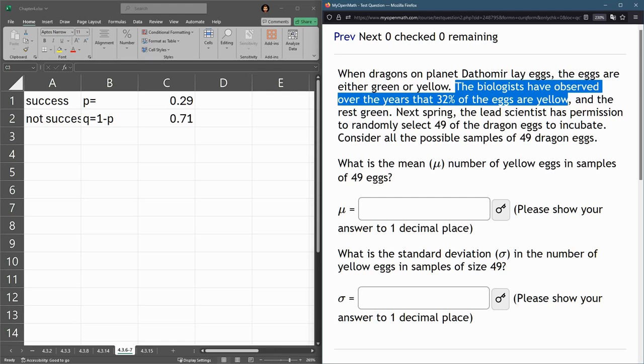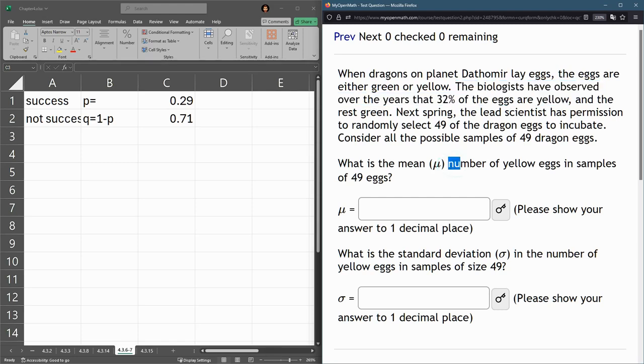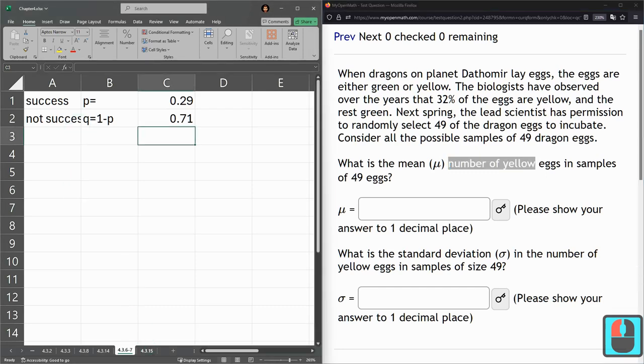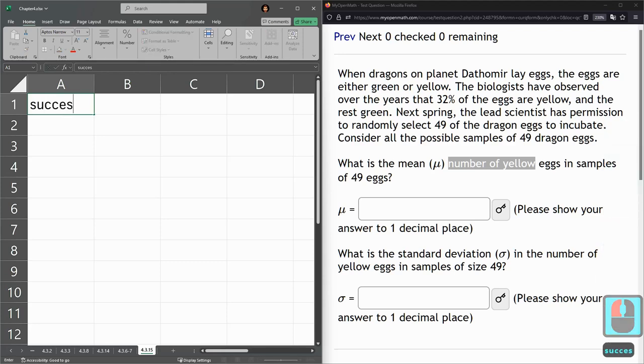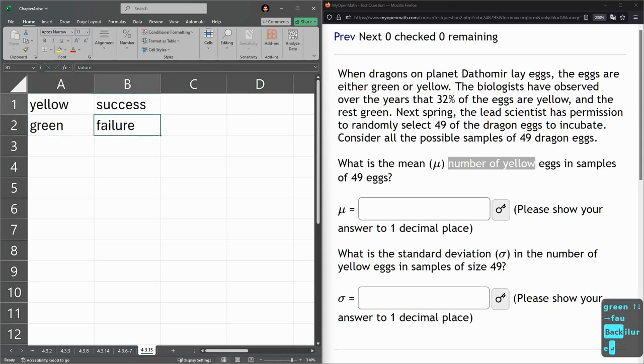And we want to define success as the number of yellow eggs. So let's go ahead and use Excel here, and I'm going to label yellow as success and green as failure.